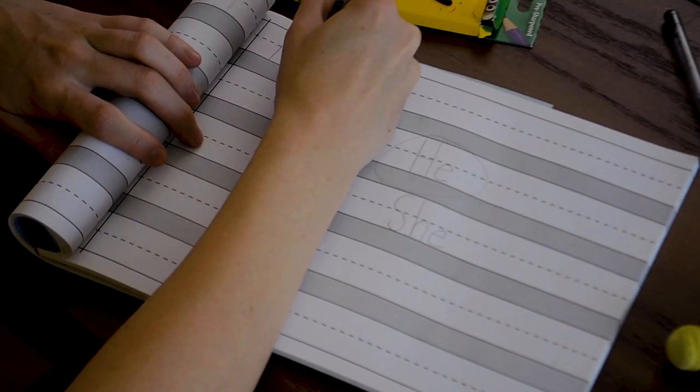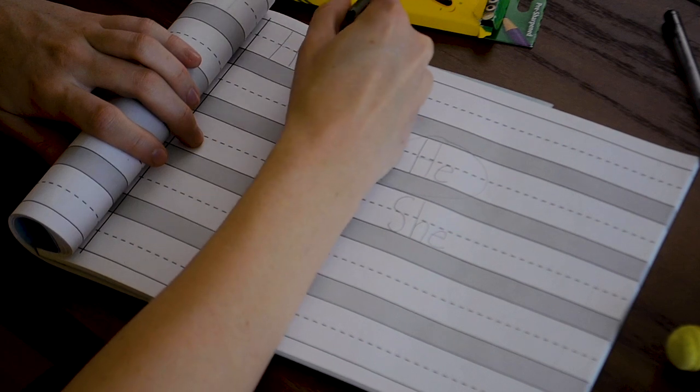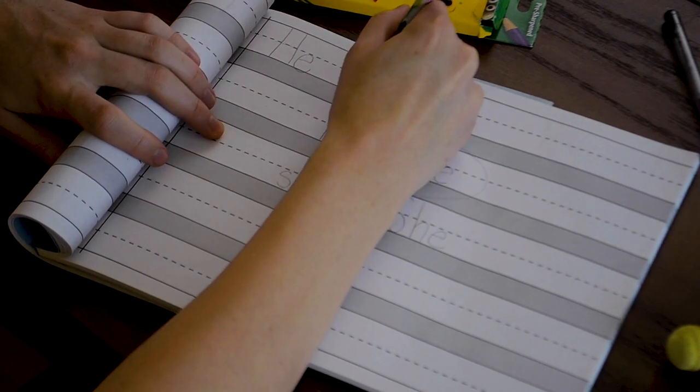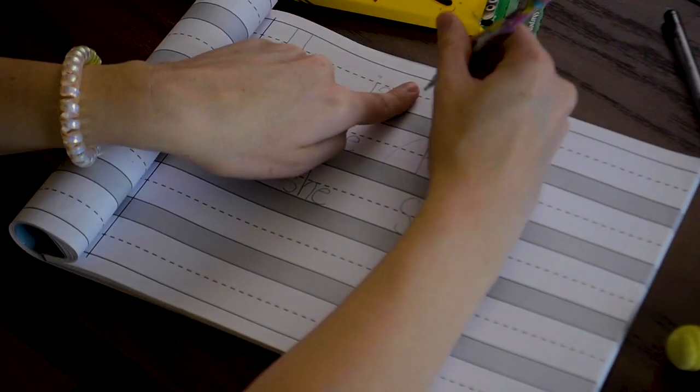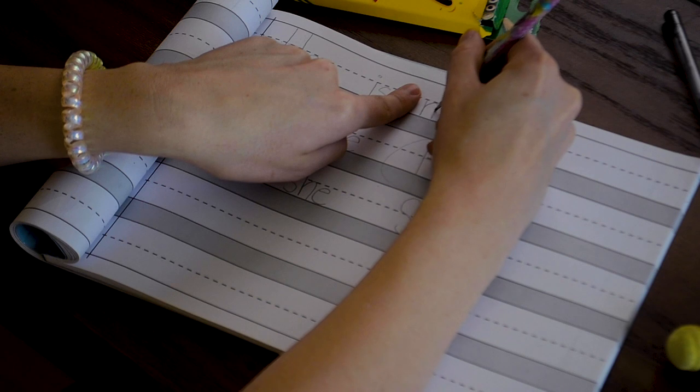He is. Remember top to bottom. A little e on the little line. He is. And remember to leave a finger for spaces, okay?